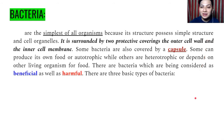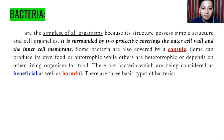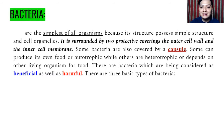Bacteria are the simplest of all organisms because they possess simple structures and cell organelles. They are surrounded by two protective coverings: the outer cell wall and the inner cell membrane. Some bacteria are also covered by a capsule — sometimes three coverings, which is why bacteria can be difficult to kill. Some bacteria can produce their own food and are autotrophic, like plants. Others are heterotrophic, meaning they depend on other living organisms for food. There are bacteria considered both beneficial and harmful.